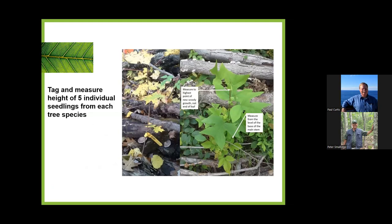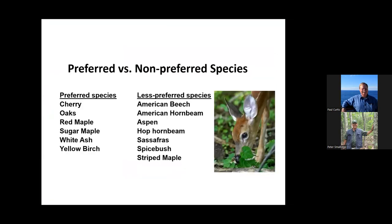For each of the tagged seedlings, you want to measure height to the highest point of woody growth from ground level. What we're looking for with AVID is changes in height growth from year to year. The assumption is if woody seedlings aren't browsed by deer and you've got adequate light in decent soil conditions, those seedlings should be putting on height growth each year. We tend to look at things in groups of preferred or less preferred species. Preferred species which deer seem to seek out include yellow birch, oak, red and sugar maples, and white ash. Less preferred species are American beech, hornbeam, hop hornbeam, and striped maple.